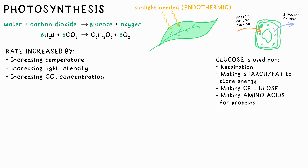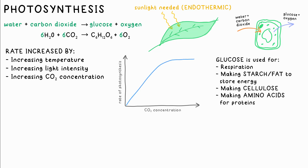For example, even if there's lots of carbon dioxide and it's warm, if there's not enough light, the rate of photosynthesis will be limited by this. In other words, it doesn't matter how much you increase the other two — it won't get any faster.